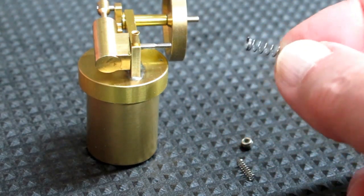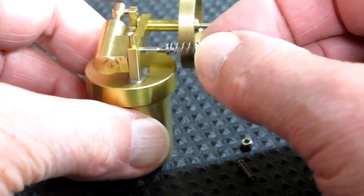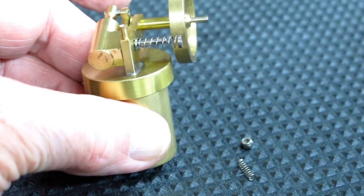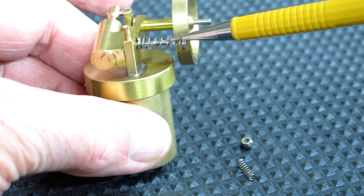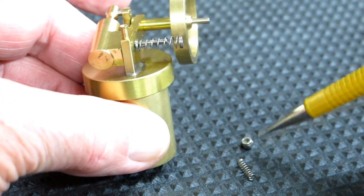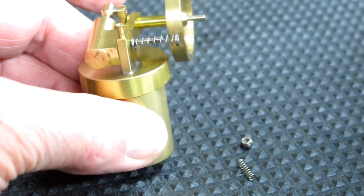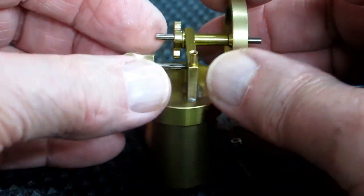Otherwise you could take a small spring from a ballpoint pen and put that on there. Cut a piece of that spring off and put a two millimeter washer on there and then put a replacement two millimeter nut.